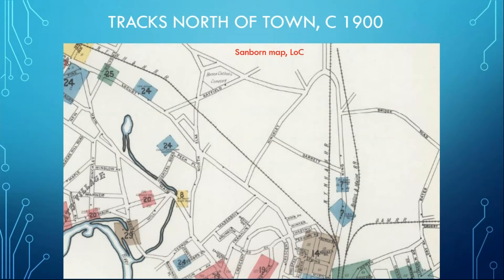Here's another Sanborn map — this is north of the downtown area. Right where that Y is near where I'm wiggling the mouse — that's about where Stop and Shop is on North King Street. The Williamsburg branch cut off and headed northwest there. The Central Mass line is coming in at the extreme lower-right corner of the track, and you can see the New Haven and the B&M headed northbound from there. There's one of the old freight stations in Northampton, right about where that Stop and Shop parking lot is.